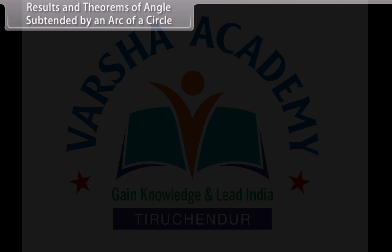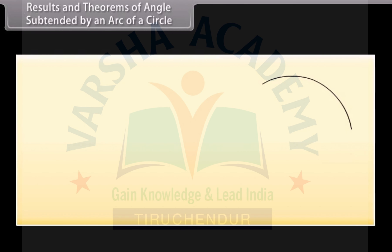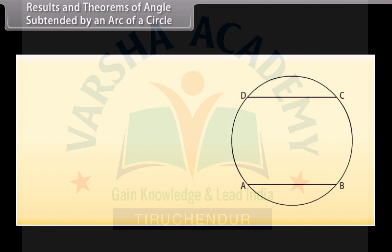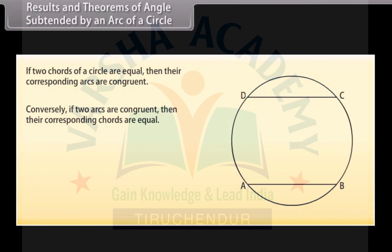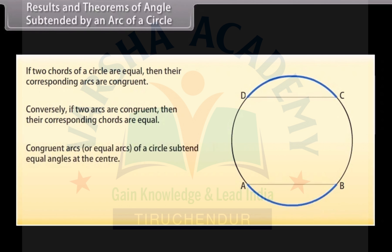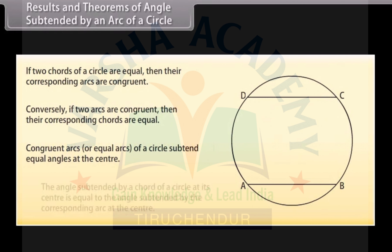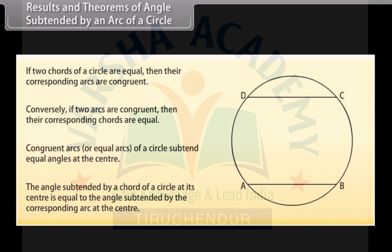Results and theorems of angles subtended by an arc of a circle. The relation between the chord and arc: if two chords of a circle are equal, then their corresponding arcs are congruent. Conversely, if two arcs are congruent, then their corresponding chords are equal. The second result: congruent arcs of a circle subtend equal angles at the center. That means the angle subtended by a chord at its center is equal to the angle subtended by the corresponding arc at the center.